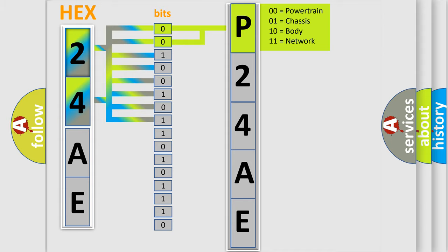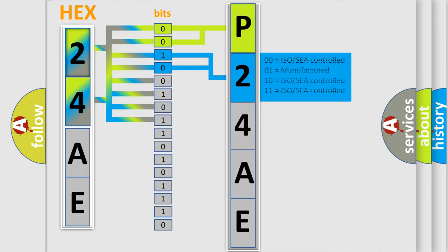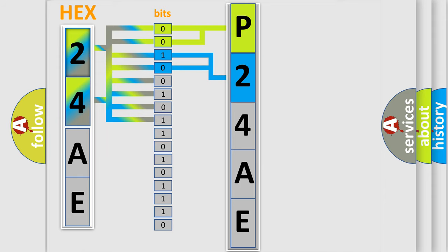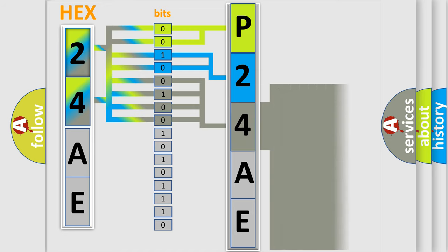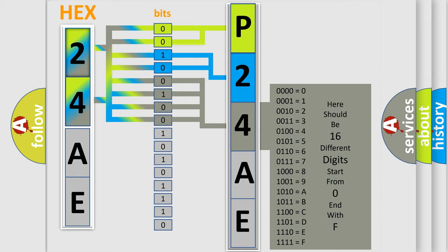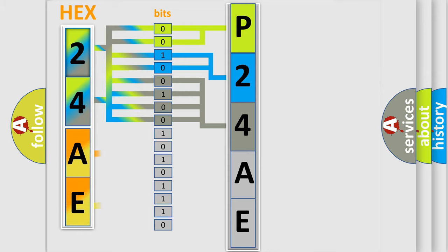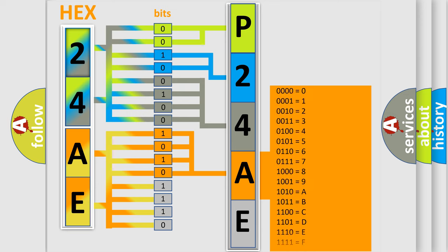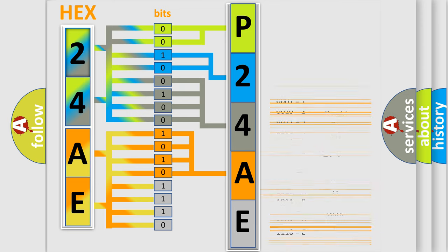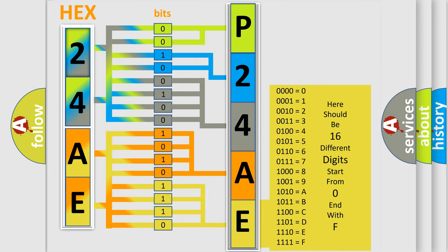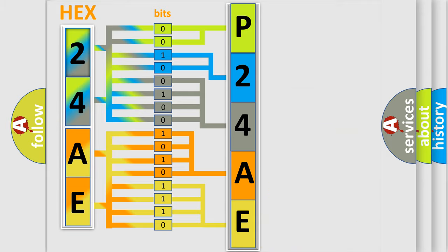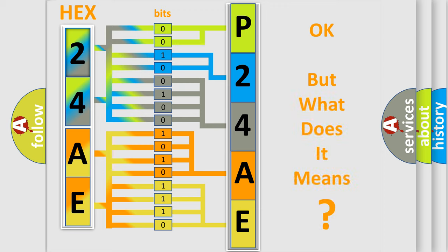The next two bits again determine the second character. The last bits of the first byte define the third character of the code. The second byte is composed of a combination of eight bits. The first four bits determine the fourth character of the code, and the combination of the last four bits defines the fifth character. A single byte conceals 256 possible combinations. We now know in what way the diagnostic tool translates the received information into a more comprehensible format. The number itself does not make sense to us if we cannot assign information about what it actually expresses.